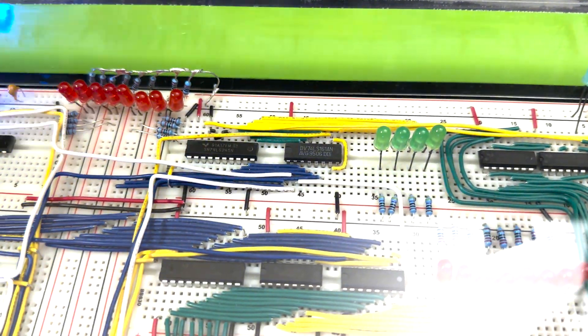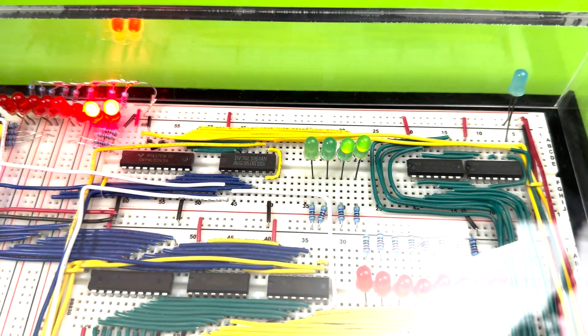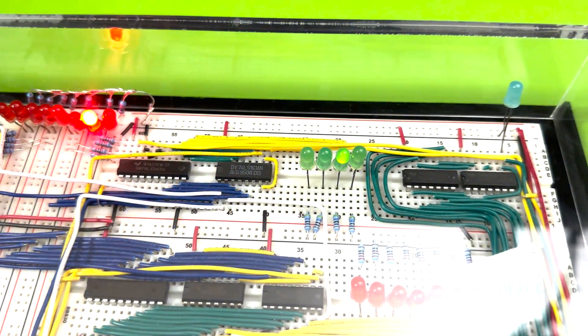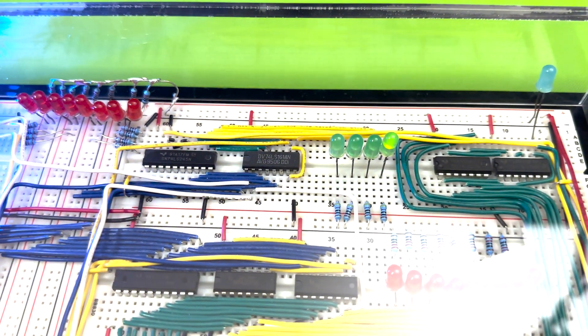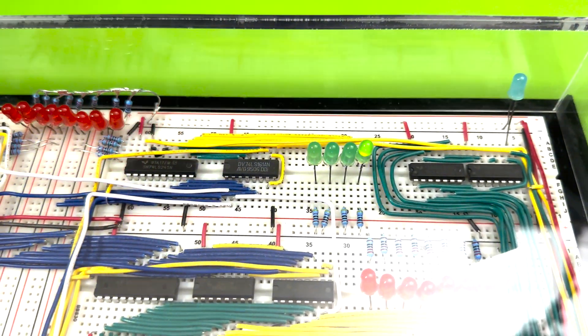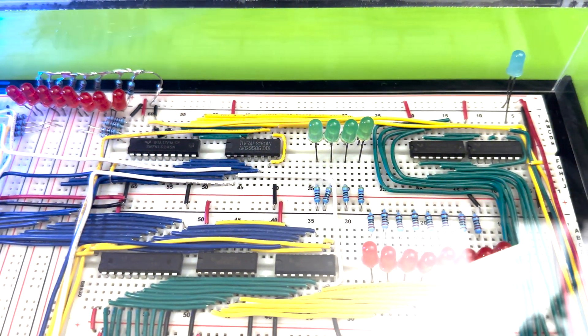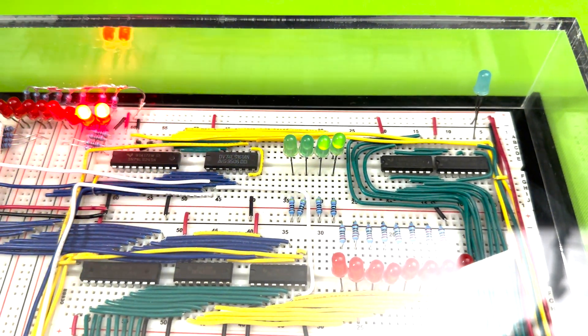Skipping over to the top of the right side, we have the program counter. The program counter basically increments each time it's told to do so, and can be written to if the computer needs to jump to a specific instruction.